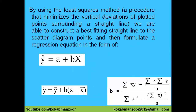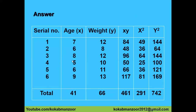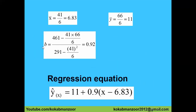Now we apply the beta formula: β = [ΣXY − (ΣX)(ΣY)/n] / [ΣX² − (ΣX)²/n]. Substituting: ΣXY = 461, ΣX = 41, ΣY = 66, n = 6, ΣX² = 291. We multiply 41 × 66 and divide by 6, subtract from 461 for the numerator; for the denominator, subtract (41)²/6 from 291. Simplifying all this, we get β = 0.92.